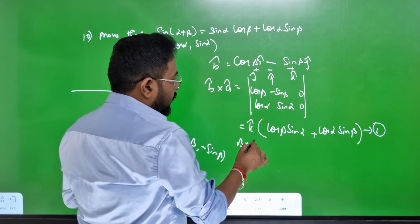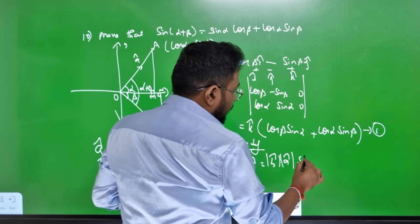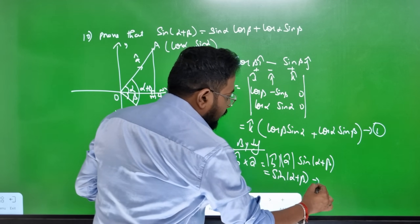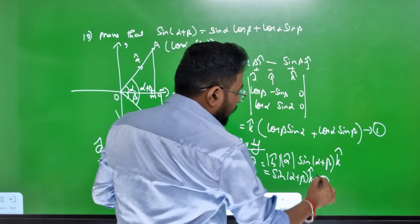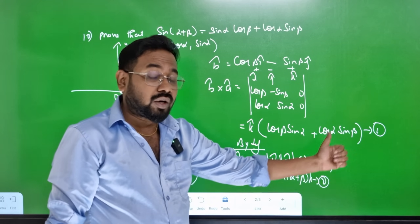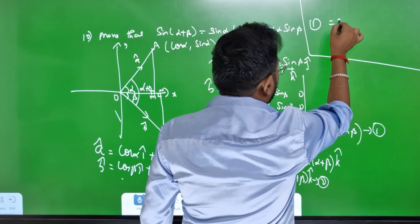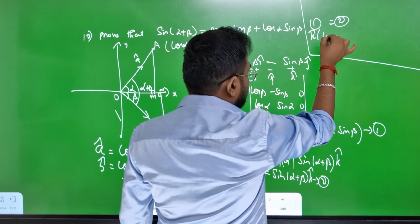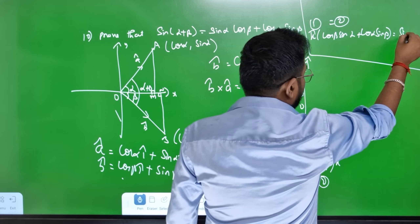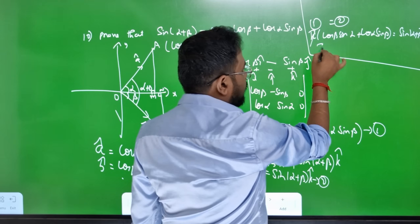By definition — what is the definition? B cross A: magnitude sin(alpha plus beta). This is the second equation. Unit normal vector k-cap. By definition in 11th standard: k-cap, n-cap, k-cap. Equation 1 equals equation 2: cos beta·sin alpha plus cos alpha·sin beta is equal to sin(alpha plus beta) · k-cap. Here is k-cap — okay, here is the answer.